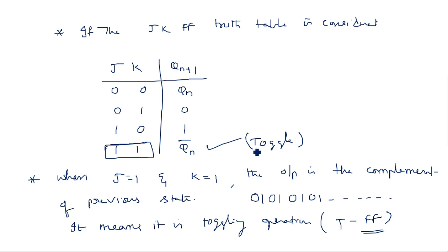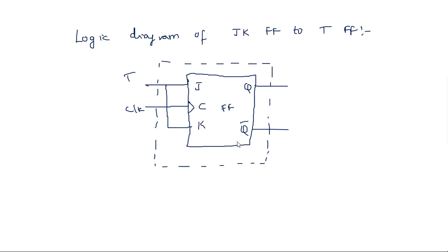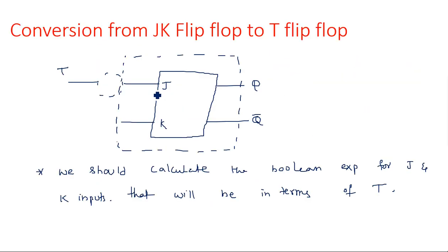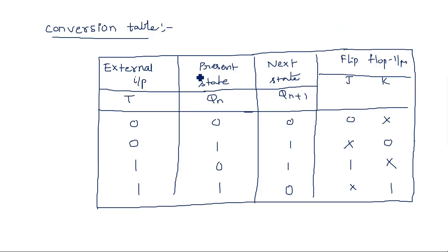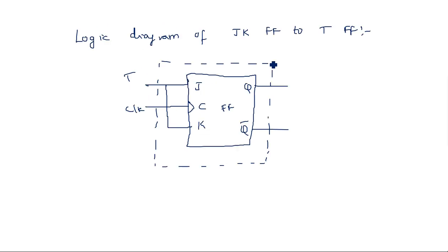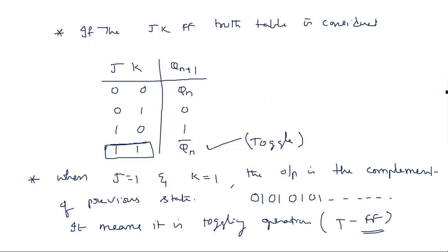This is also one of the reasons why the JK flip-flop is used for the conversion to a T flip-flop even without any other logic gates. As I mentioned, we may expect a logic circuit, but fortunately we don't need anything extra — when J and K are short-circuited together, it acts as a T flip-flop. Thank you.